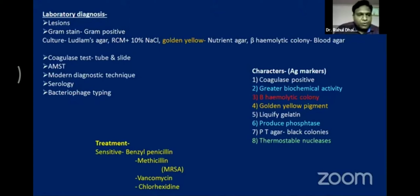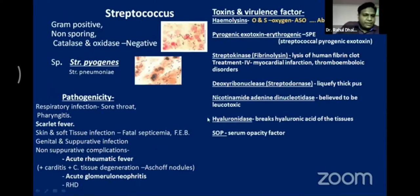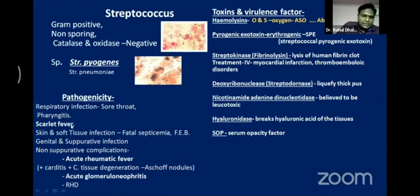Now we turn to streptococcus. 'Strepto' means chain — cocci in a chain is streptococcus. It is non-sporing, catalase and oxidase negative. Species include Streptococcus pyogenes and Streptococcus pneumoniae. Streptococcus pyogenes causes sore throat, pharyngitis, scarlet fever, and soft tissue infections.